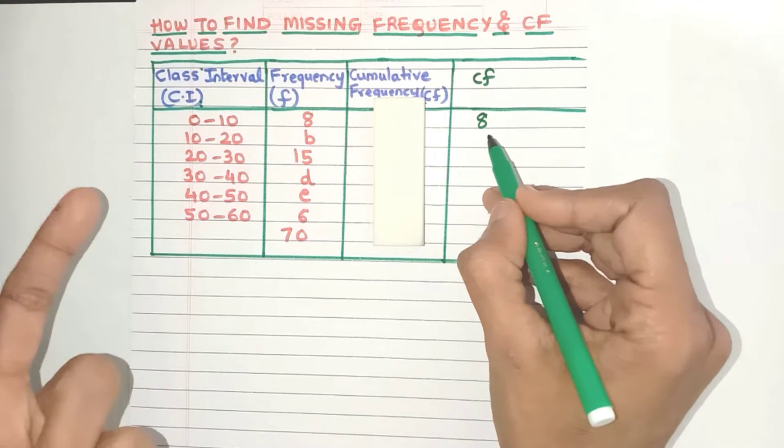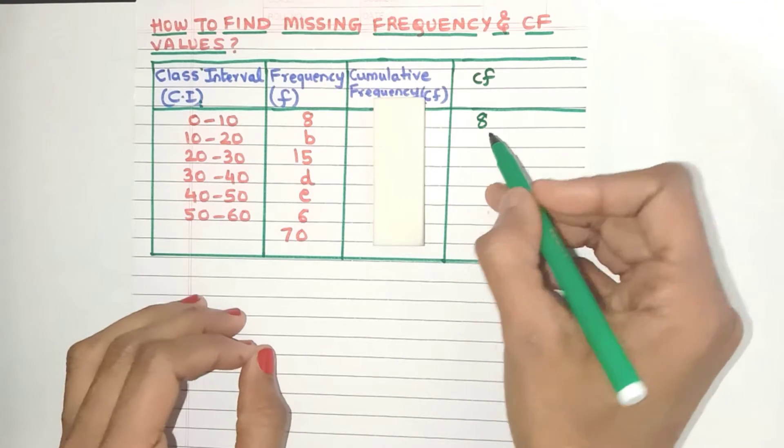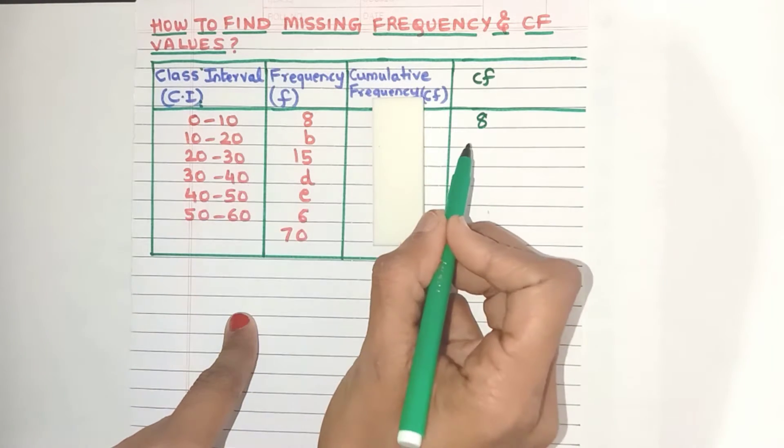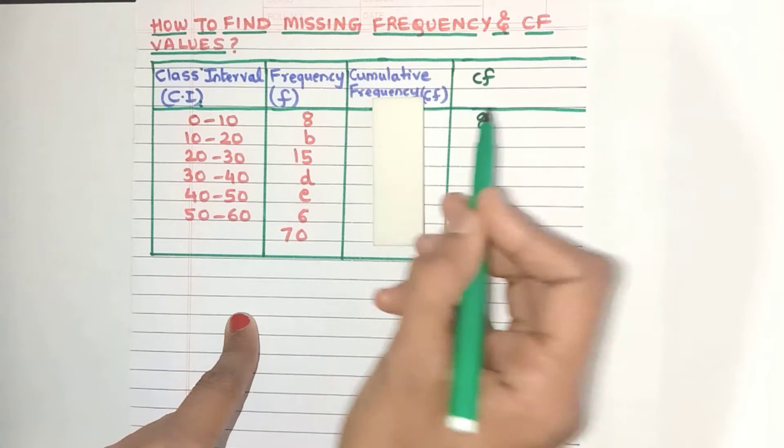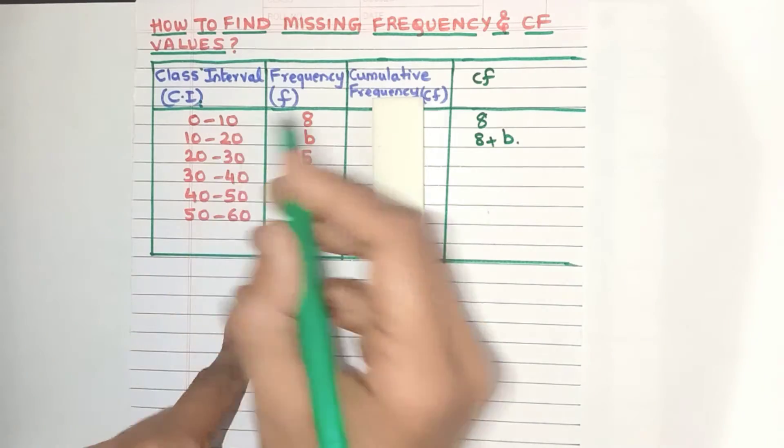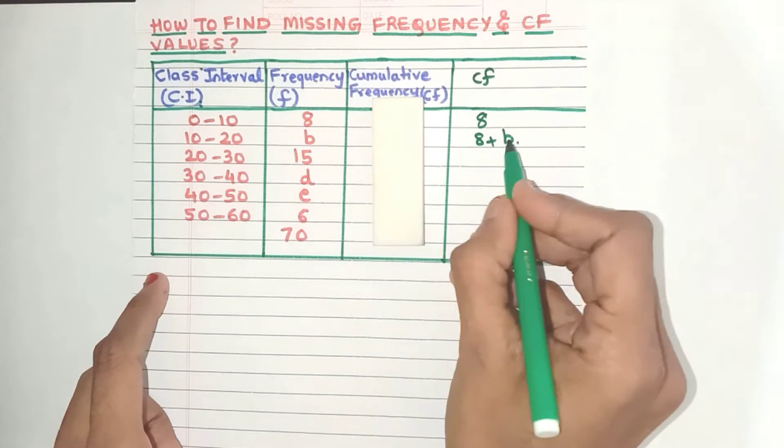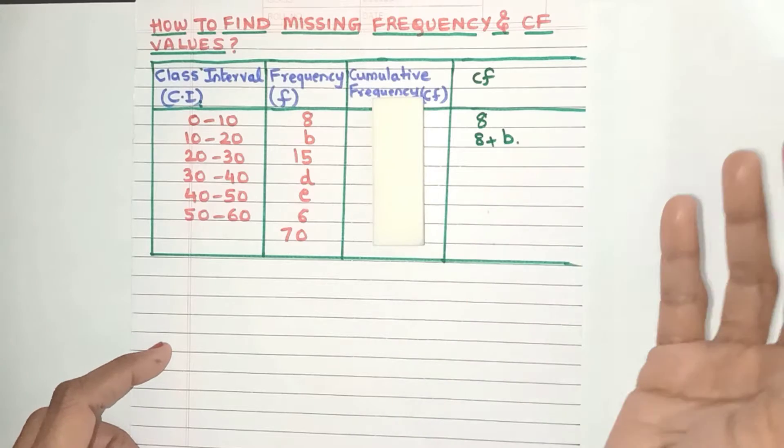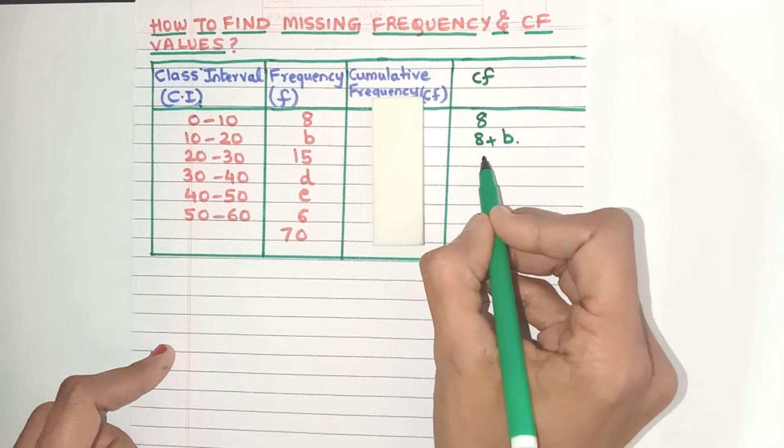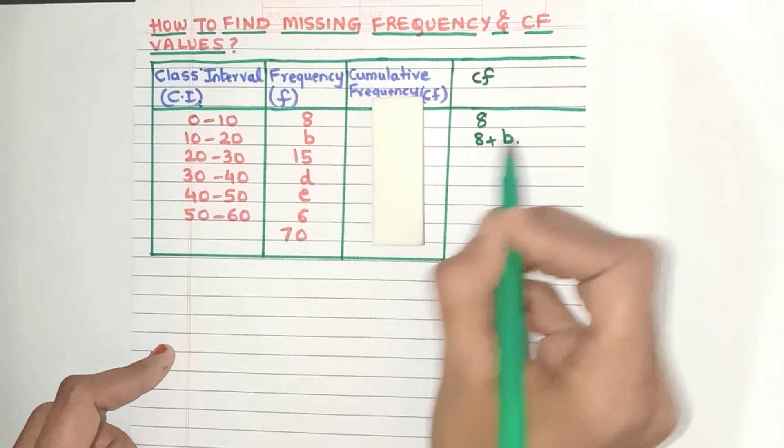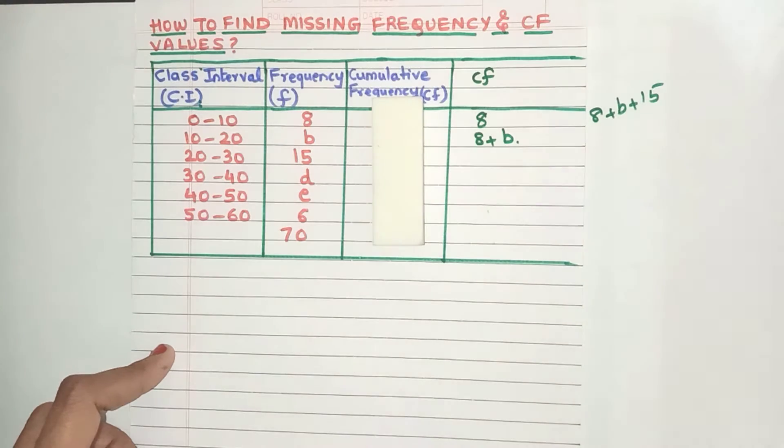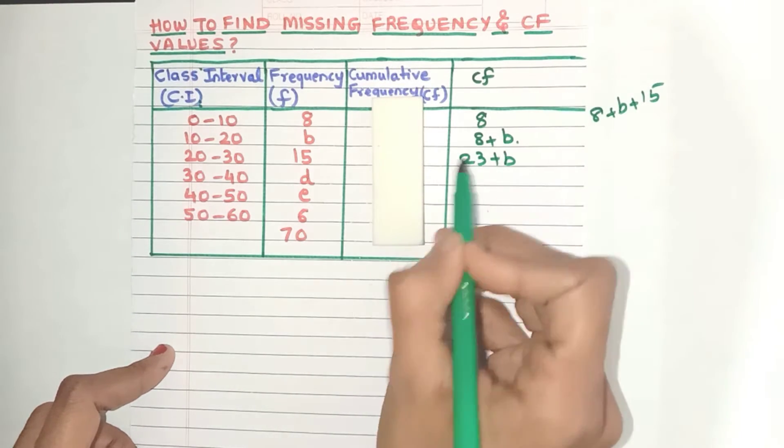Now what about the CF of the next class interval? Yes, it will be the CF of the previous class interval plus the frequency of the present class interval. So 8 plus B will be the CF of this class interval. Now 8 and B are unlike so we cannot simplify them further. We'll just keep it as it is. Now for the next CF it will be 8 plus B plus 15. Now 8 and 15 they are like so I can add it. I'll get 23 plus B.